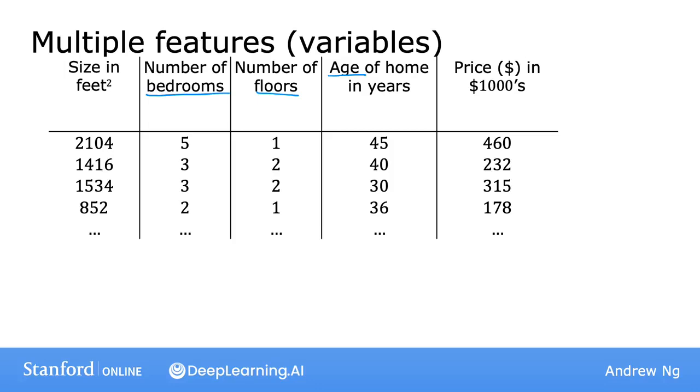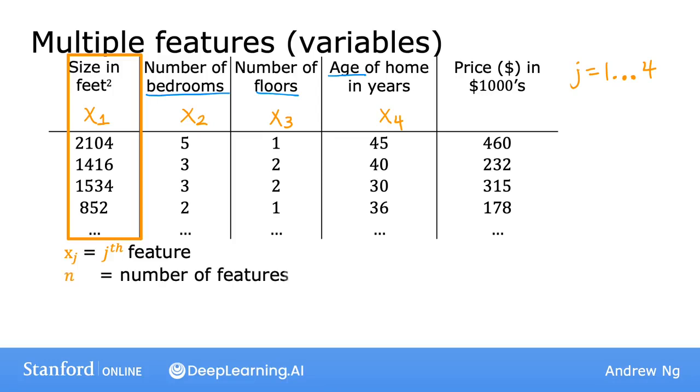To introduce a little bit of new notation, we're going to use the variables x subscript 1, x subscript 2, x subscript 3, and x subscript 4 to denote the four features. And for simplicity, let's introduce a little bit more notation. We'll write x subscript j, or sometimes I'll just say for short x sub j, to represent the list of features. So here, j will go from one through four, because we have four features. I'm going to use lowercase n to denote the total number of features. So in this example, n is equal to four.